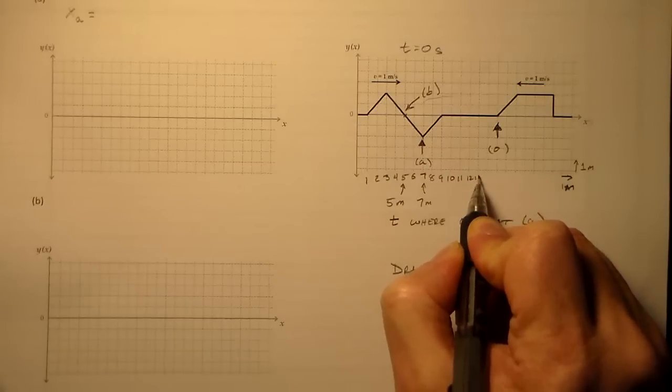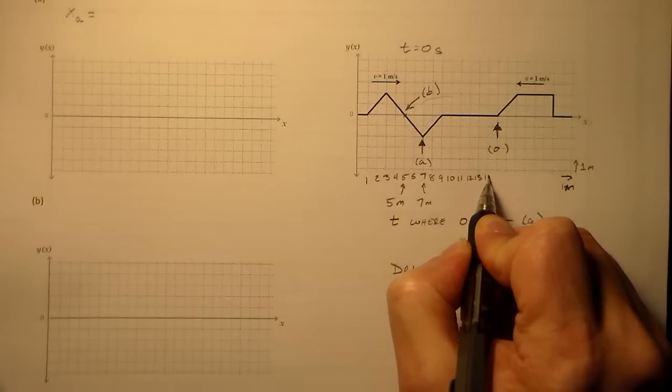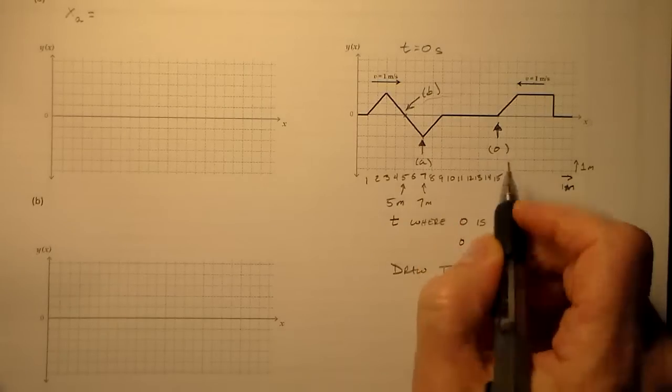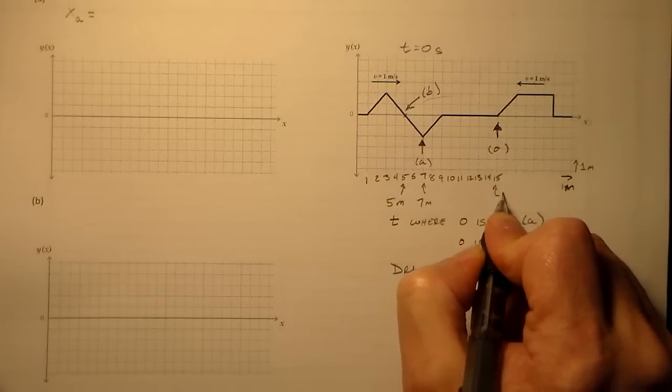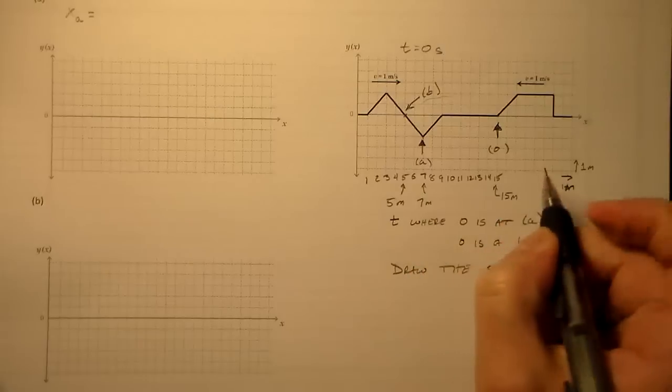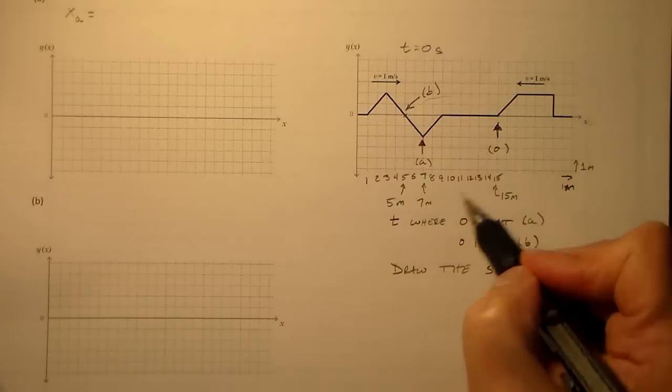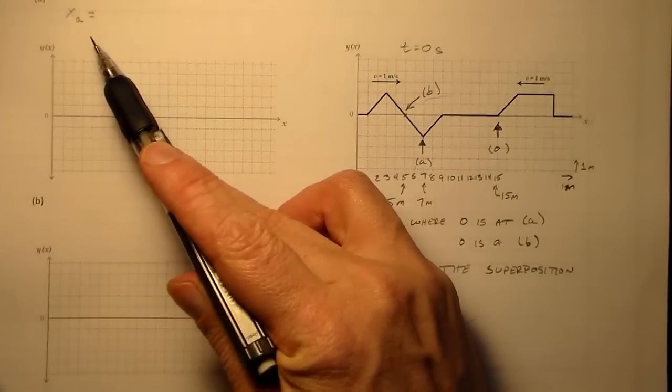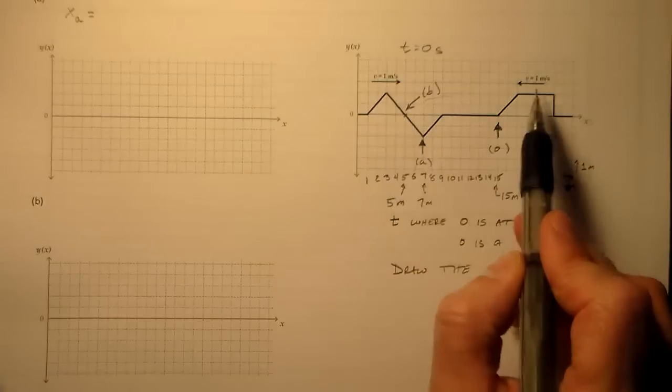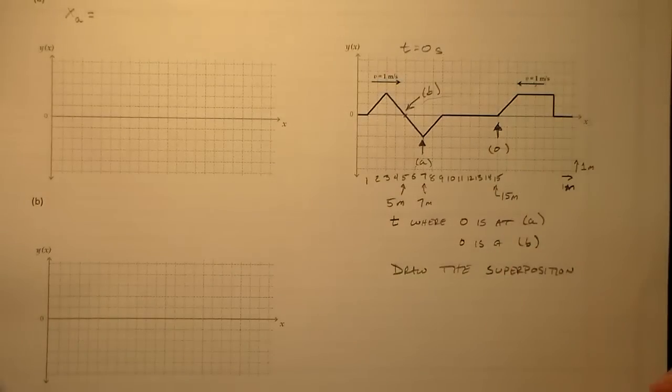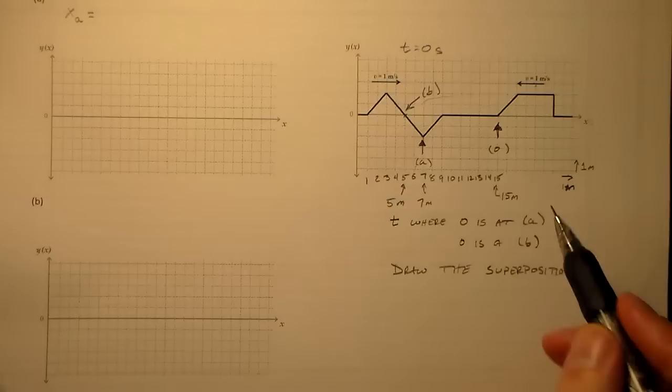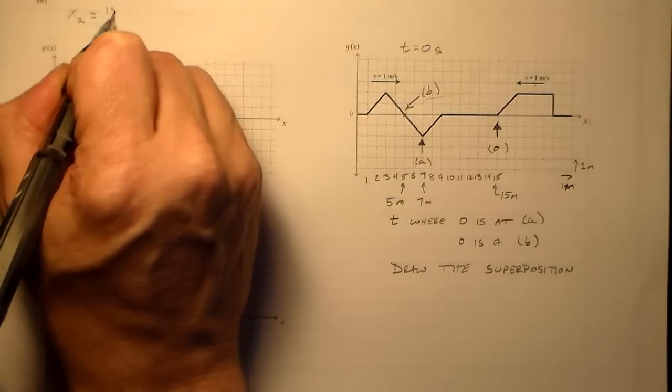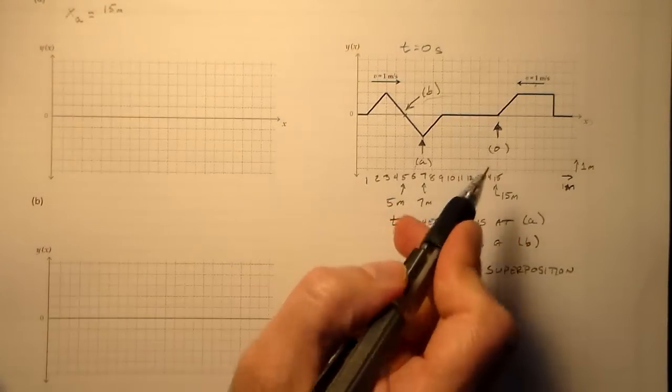And then our tip here is at 15 meters. Okay, so we can use these positions to find the position where they cross. Again, because these speeds are the same, that's just going to be the average position at t, from t equals zero. So, we can say, all right, that's 15 meters here.